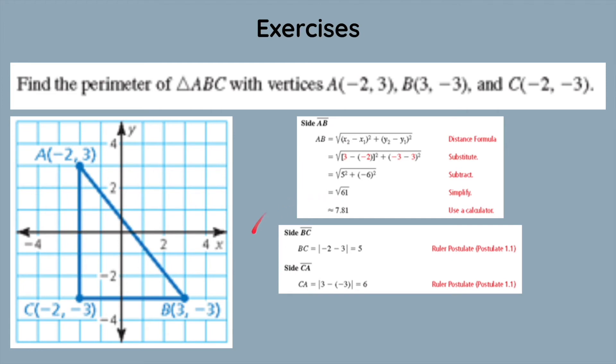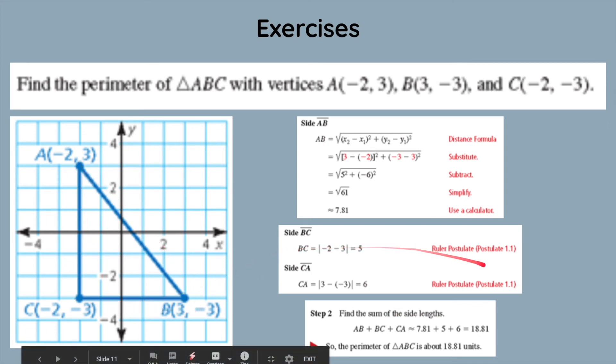Next, when we find side BC, side BC is much easier to find because we can just count the units. 1, 2, 3, 4, 5. So, that's the length of the side. And for side CA, it is also easy. We can just count 1, 2, 3, 4, 5, 6. It is so much easier that this is a right triangle because we have one horizontal and one vertical line, making it much easier to count these two lines. After we have figured out all the lengths of the three sides, we can add them up to get 18.81 units.